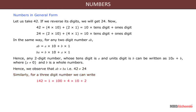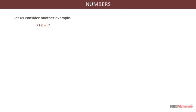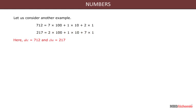Similarly, for a three digit number we can write: 142 is equal to 1 into 100 plus 4 into 10 plus 2 into 1. And 241 is equal to 2 into 100 plus 4 into 10 plus 1 into 1. Here abc is equal to 142 and cba is equal to 241, so abc is not equal to cba. For another example, 712: here abc is equal to 712 and cba is equal to 217.